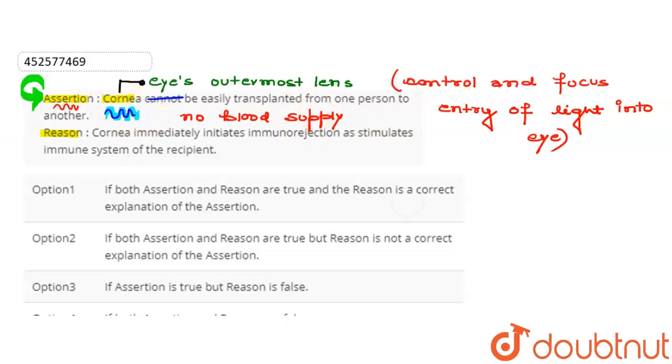Now we will see the reason. The reason given is that cornea immediately initiates immunorejection as it stimulates the immune system of the recipient. So this statement is directly incorrect.